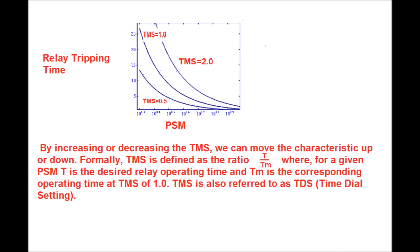Formally, TMS is defined as T divided by TM, where for a given PSM, T is the desired relay operating time or tripping time, and TM is the corresponding operating time at a TMS of 1. TMS is also referred to as TDS, that is, Time Dial Setting.